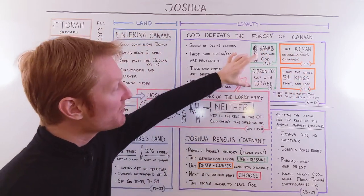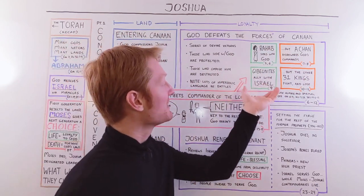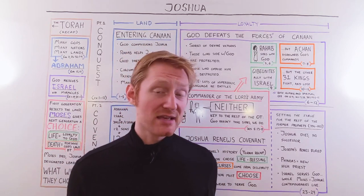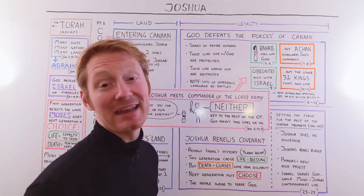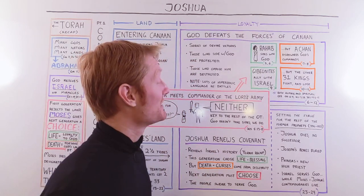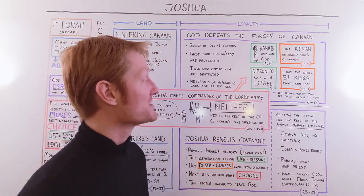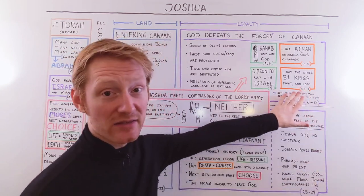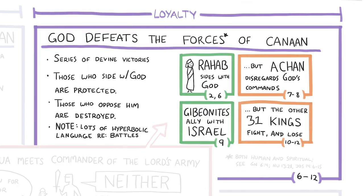On the other hand, Achan, who is one of the Israelites, rejects God's commands and endangers the rest of the Israelite camp. He dies in a rather tragic fashion — those who oppose God end up being destroyed in the book of Joshua. We see this at a personal level, but then it scales up. A group of people called the Gibeonites ally themselves with Israel through clever trickery, getting Israel to not destroy them, and they survive and are protected. But the other 31 kings that come up against Joshua don't submit — they fight and they lose and they're wiped out.